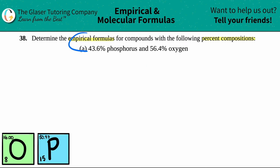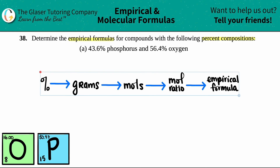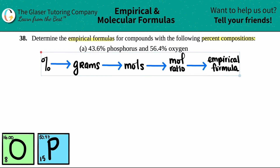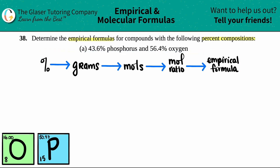All they give us is a percentage and they're looking for a formula. That might seem a little challenging, but there's a four-step process. If you guys remember the process, you guys will be golden for these types of questions. Here are the four steps, all starting with percentages and going to an empirical formula.